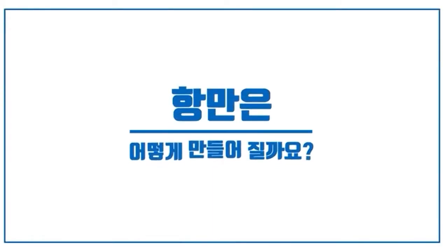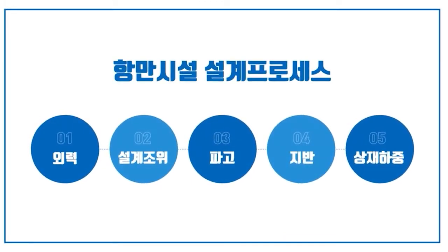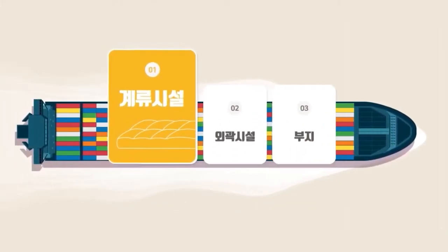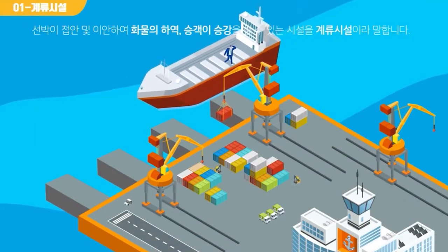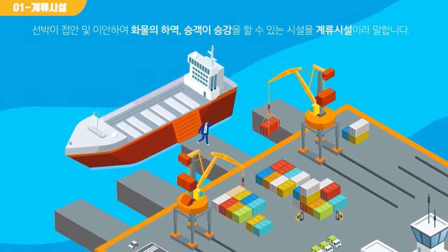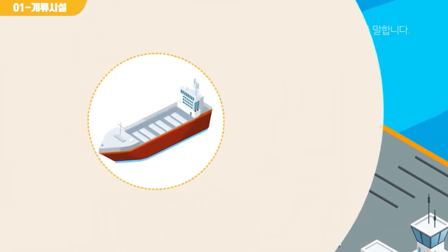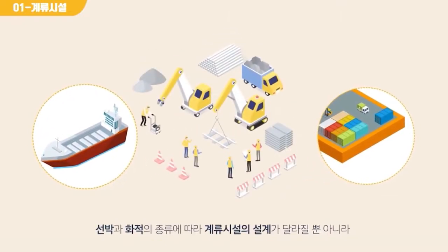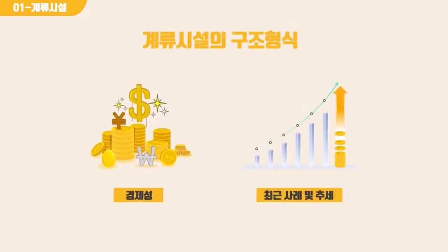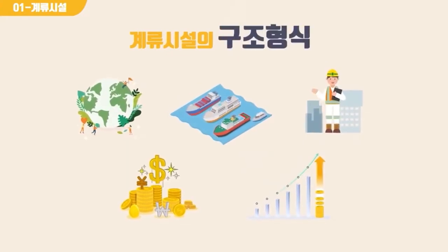[Korean narration — Busan Port Authority video, Part 2] The video asks: how is a harbor built? Reflecting the design process conditions previously discussed, what actual harbor facilities are designed? First, mooring facilities — installations that allow ships to berth, depart, load cargo, and embark passengers. The design of mooring facilities varies according to the type of vessel and cargo, and the structural format is selected considering natural conditions, usage conditions, construction conditions, economic feasibility, and recent trends.